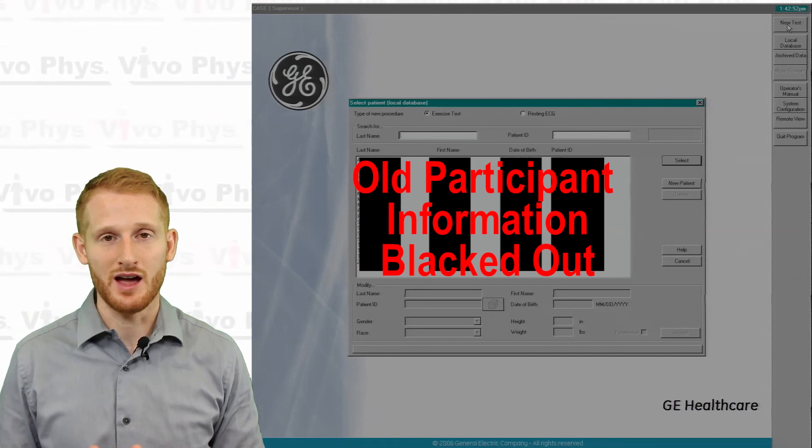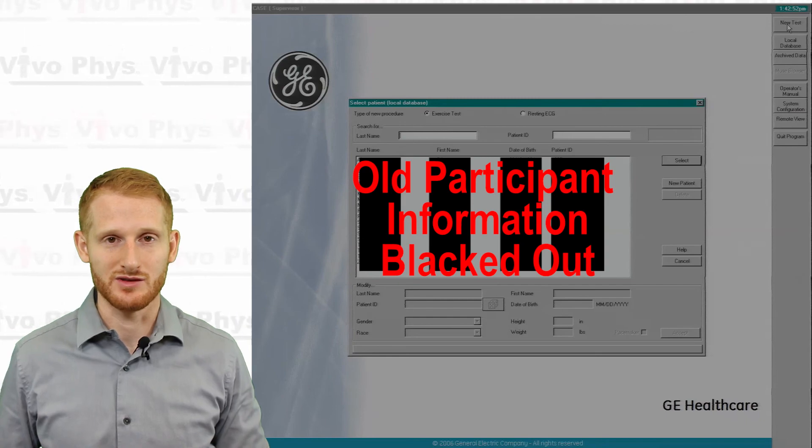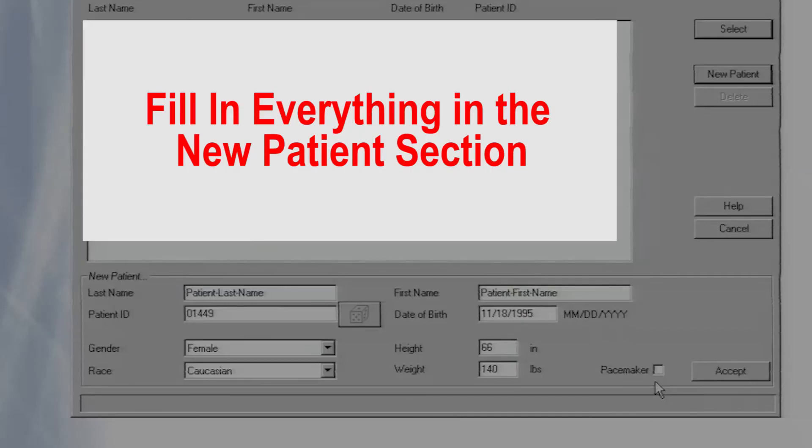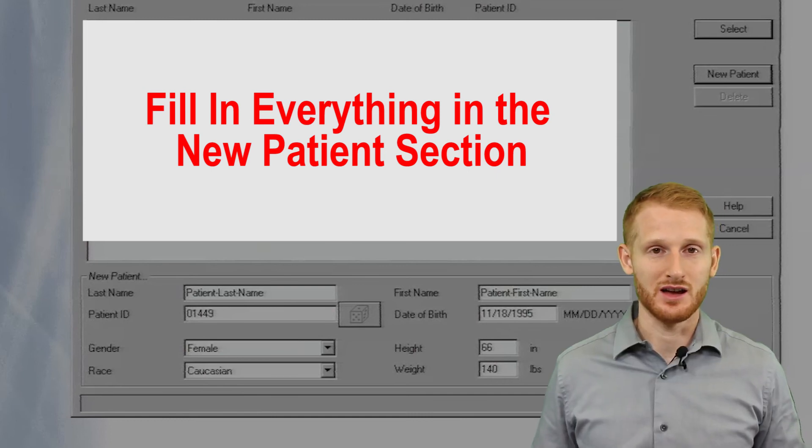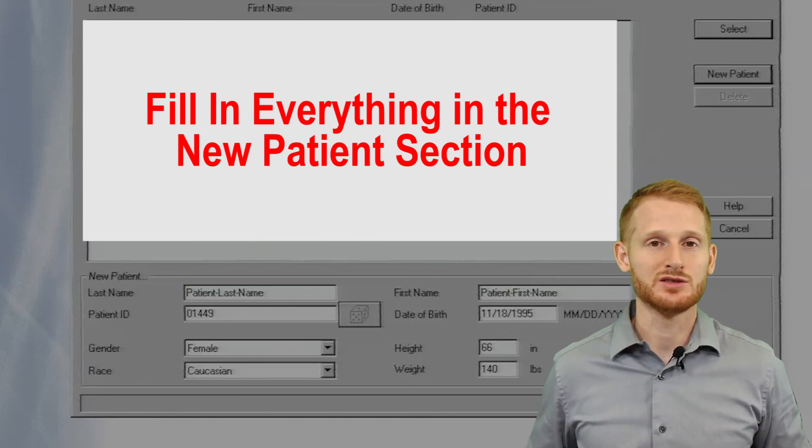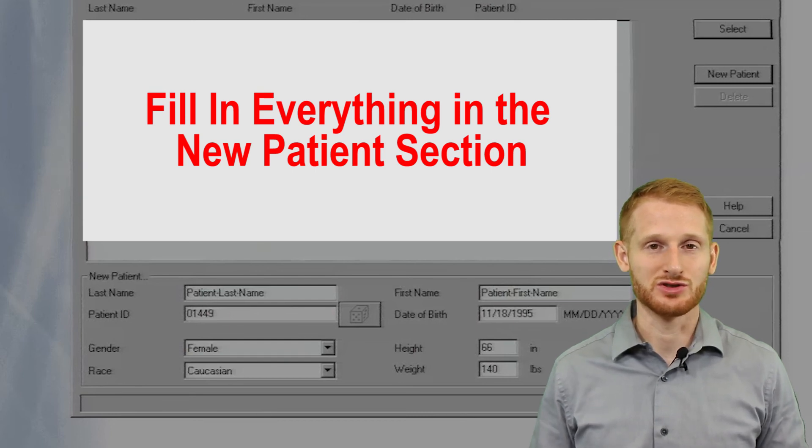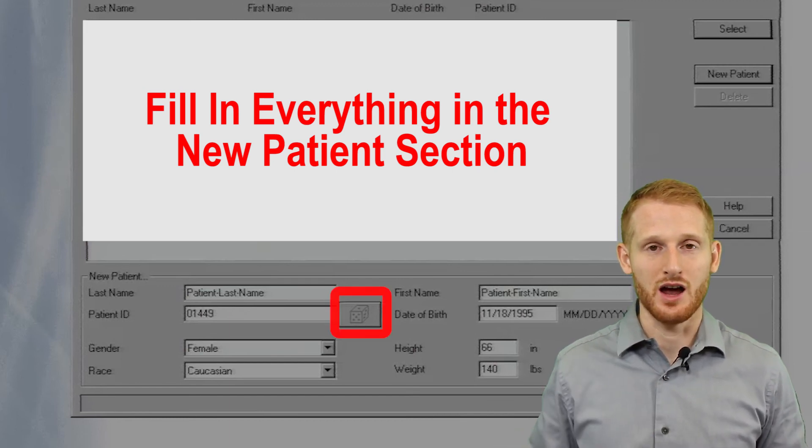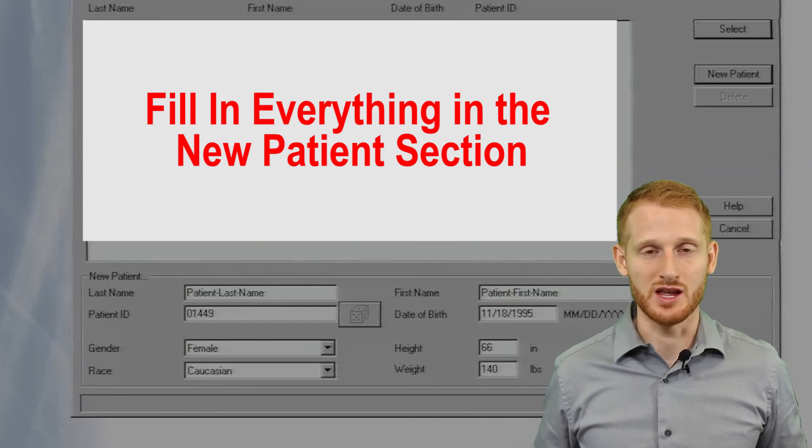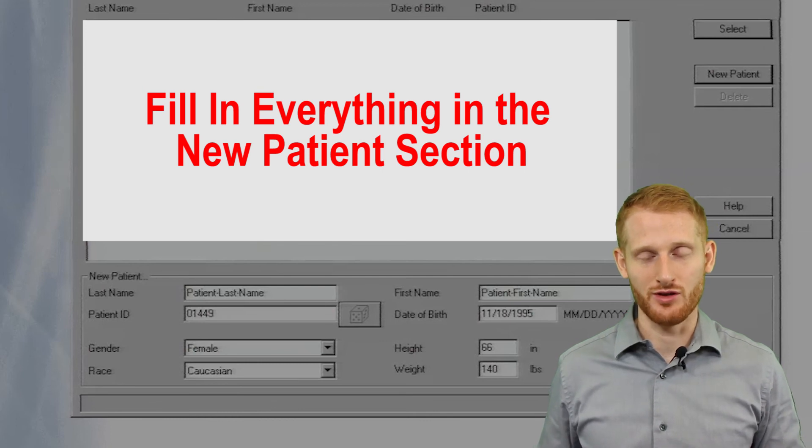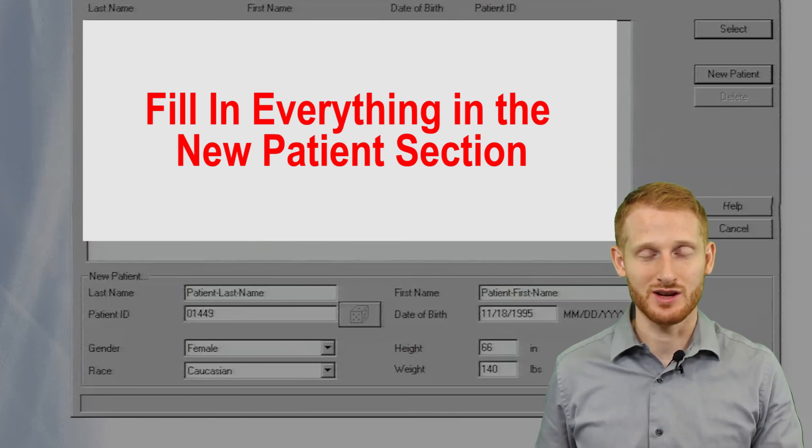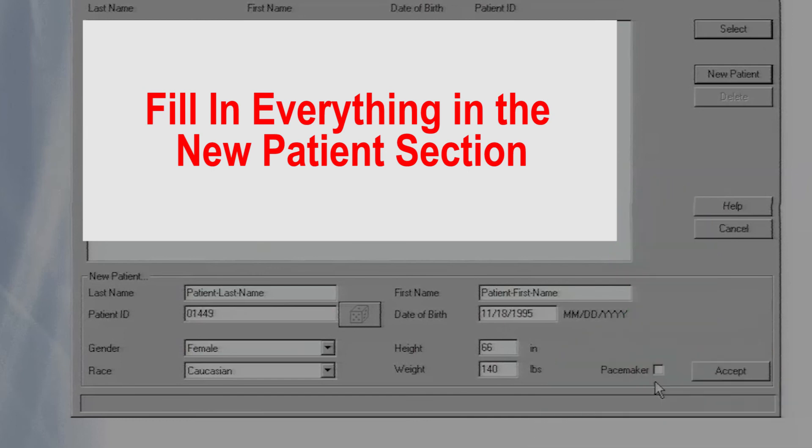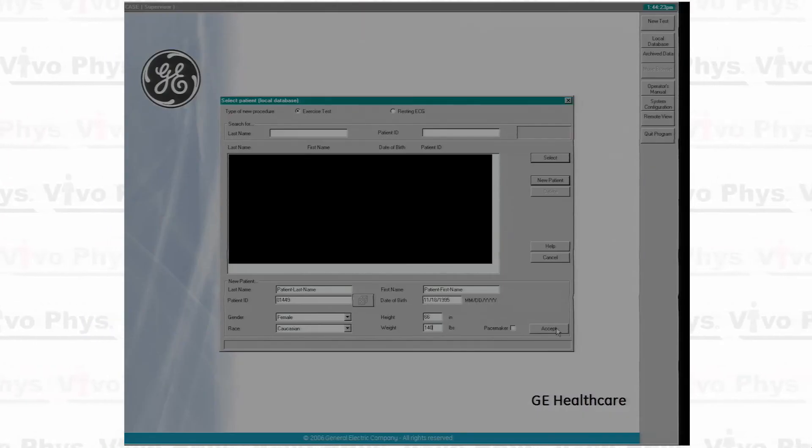If they are somebody that you have not tested before, you need to create a new participant. Once you click on the button that says new patient, you're going to want to type in the person's first and last name. If this is for research, make sure that you put in just their subject ID number and not their actual name. There is also a section where it asks for a patient ID. You do need to put in some sort of ID number. If it's a research subject, you're just going to put their research ID number in again. If it is not, there's a little dice button there. You can just click that, and it'll generate some random number. You also should put in their age, because that's going to be used to predict their age-predicted max heart rate.